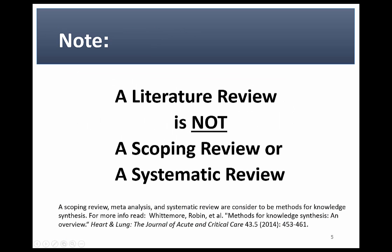While narrative, systematic, and scoping reviews are all types of literature review, they differ significantly based on the reason for conducting the review, such as the initial research question, the way the supporting literature search and article selection happens, and what measures, if any, are taken to reduce bias. For this reason it is important to avoid confusing these three types of review.